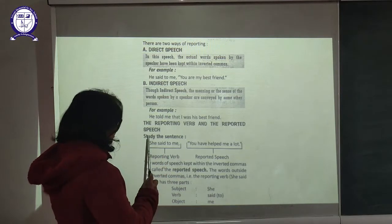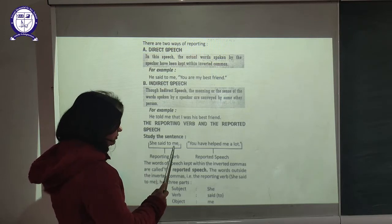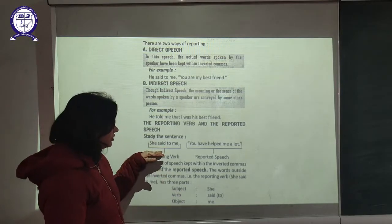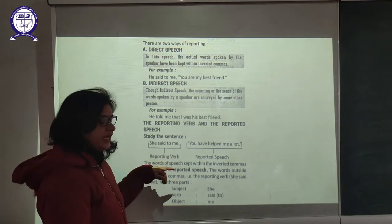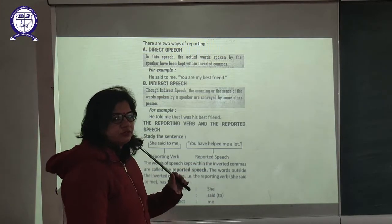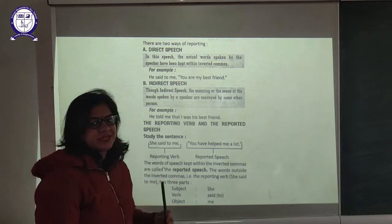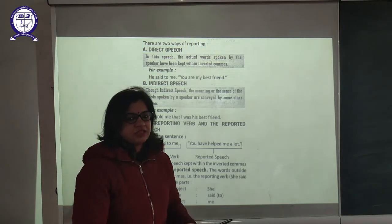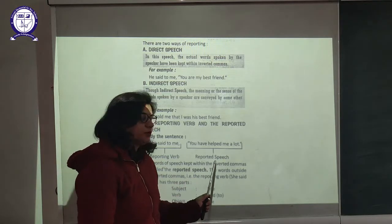Now let's see the different parts of the speech. For example: 'She says to me, you have helped me alone.' The words before the comma — who said and to whom — those group of words are known as the reporting verb, and the actual words of the speaker are known as the reported speech. In a reporting verb there are two parts of a sentence: the reporting verb, which tells us who said to whom, and the reported speech, which tells us whatever is being said. The exact words of the speaker are written in inverted commas and that is known as the reported speech.